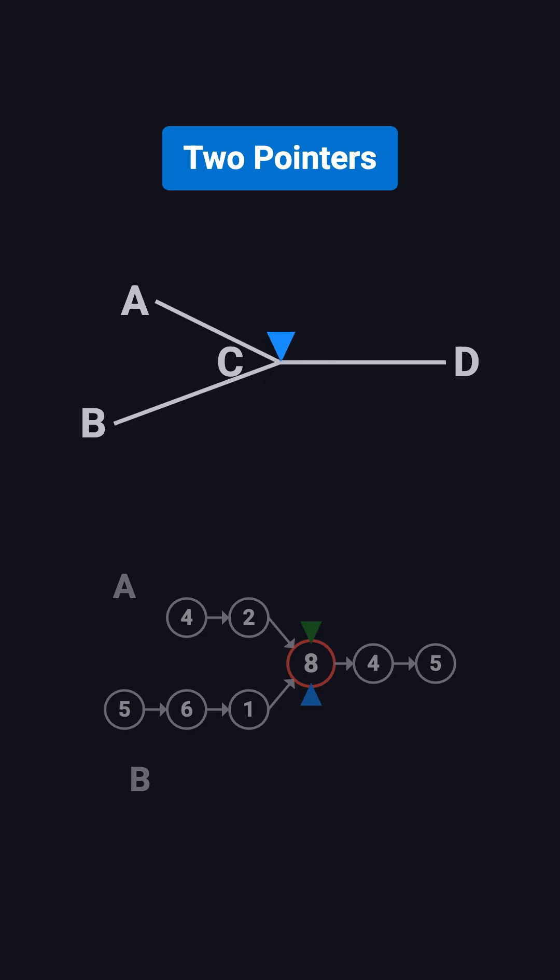Pointer pA walks AC, then CD, then BC, and ends up at C. Its total distance is AC plus CD plus BC.